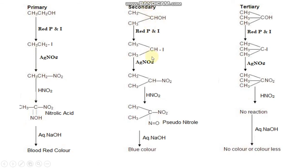Similar reaction steps are involved for secondary alcohols, but in the last step we get a blue colour. The nitroalkane derived from secondary alcohol reacts with nitrous acid to give a pseudo-nitrol. This pseudo-nitrol reacts with aqueous NaOH or aqueous KOH to give a blue colour. In the case of tertiary alcohol, the nitroalkane derived from tertiary alcohol does not react with nitrous acid, so we get no reaction and a colourless solution.